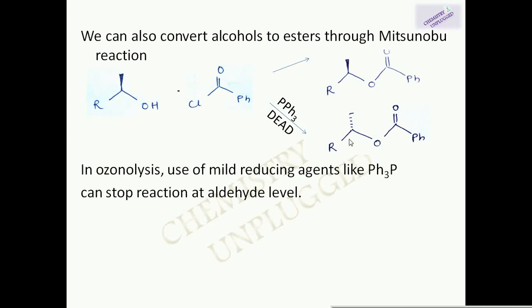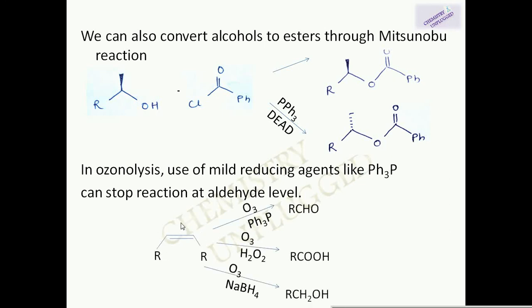In ozonolysis reactions, triphenylphosphine can also be used as a mild reducing agent to stop the reaction at the aldehyde level. If we have an alkene and use triphenylphosphine, we get two molecules of RCHO. Using hydrogen peroxide converts the product to a carboxylic acid, and using sodium borohydride gives an alcohol. This is a very important reagent and we will see related problems in upcoming videos. Keep watching and subscribing, and please hit the like button. Thank you!